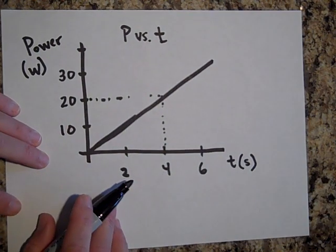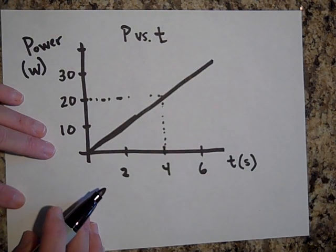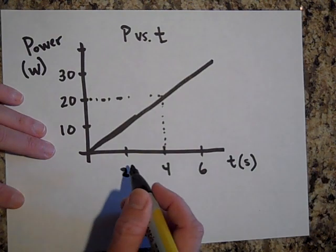So the area underneath this graph is the energy that changes forms or it's the work done, one or the other, by this force. Okay, so let's say that I want to find the work done from two seconds to four seconds.